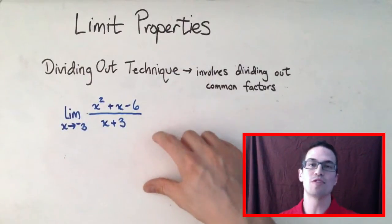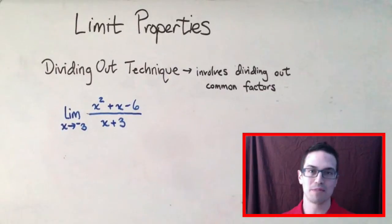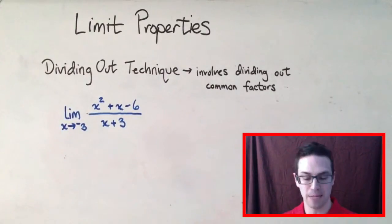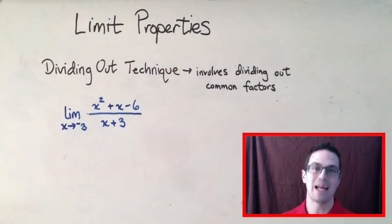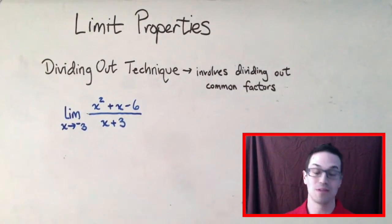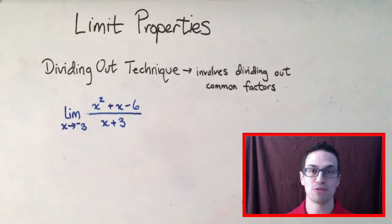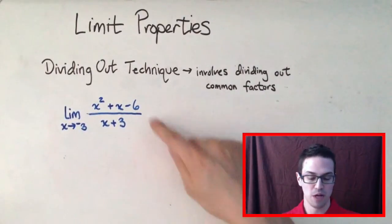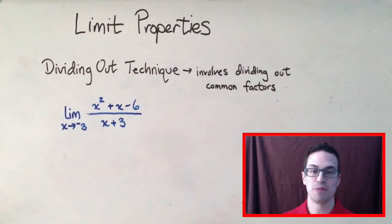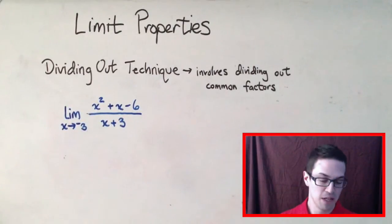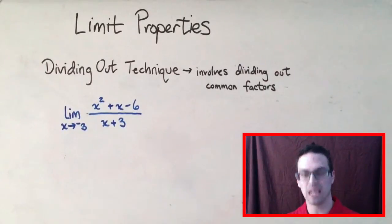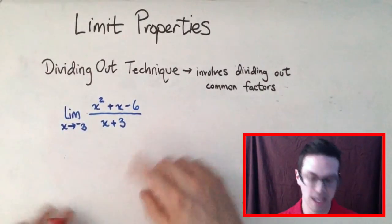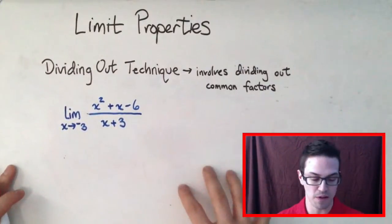This zero over zero indeterminate form tells us that we may be able to use the dividing out technique to solve this limit algebraically, so you do not have to use a graph or a table. Sometimes the problem asks you to do it algebraically, and that's what you're going to have to do. So we found out it's indeterminate — that's one of the first steps to figure out if you need to use the dividing out technique.